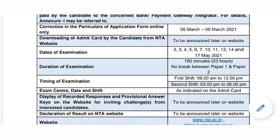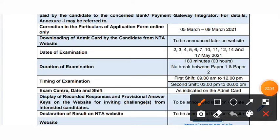You will have time for correction of your form from 5th March to 9th March — 5 days for correction. If you want to change your category or fill in something, you can correct your information. After that, you will get your admit card later on.